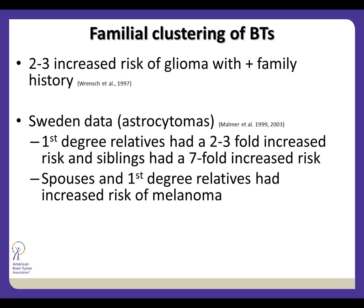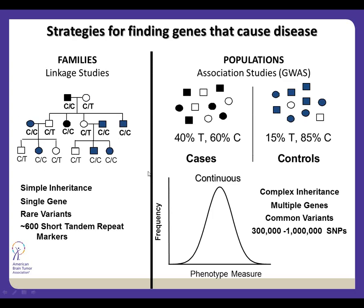We have been actively studying some of those families through the Gliogene study — and for those on the line involved in that study, we thank you very much. From the epidemiologic data, we've been able to show that individuals with glioma may have family members also at increased risk for glioma — but we don't know yet what genes are involved with that risk. That's something we're working to figure out.